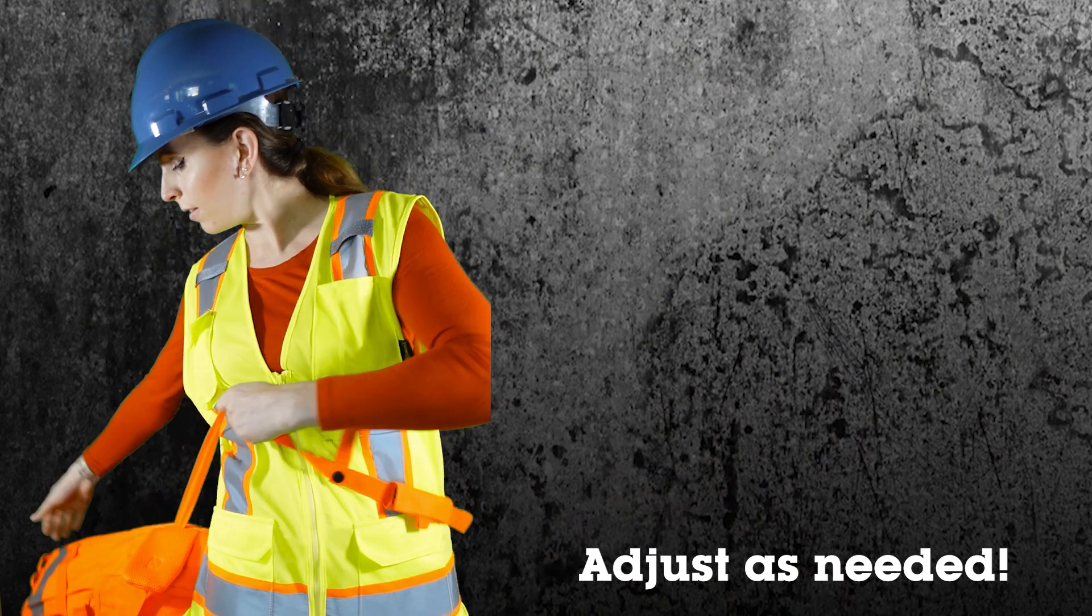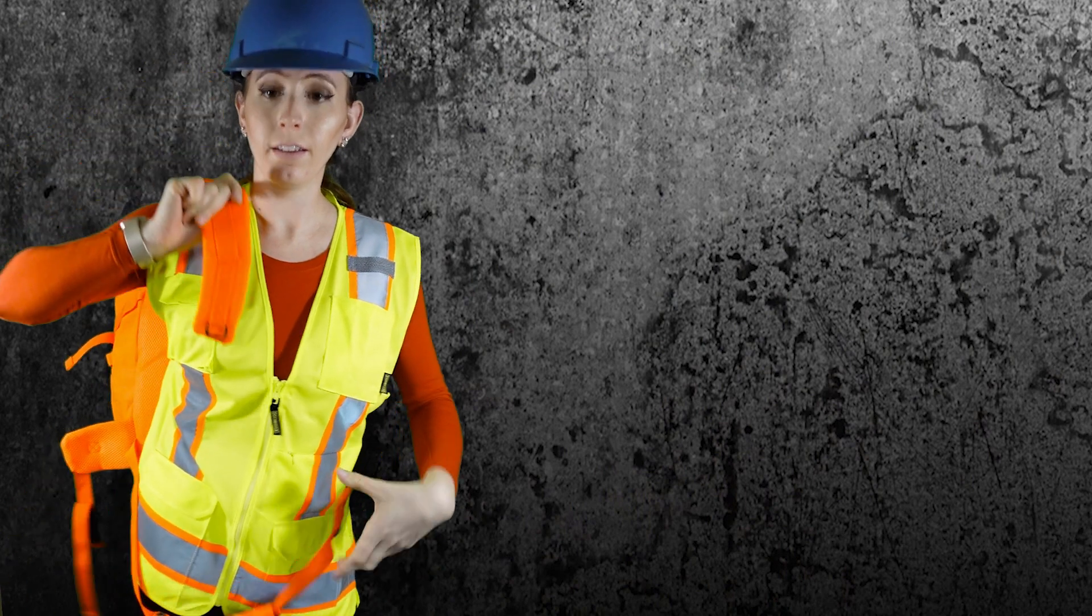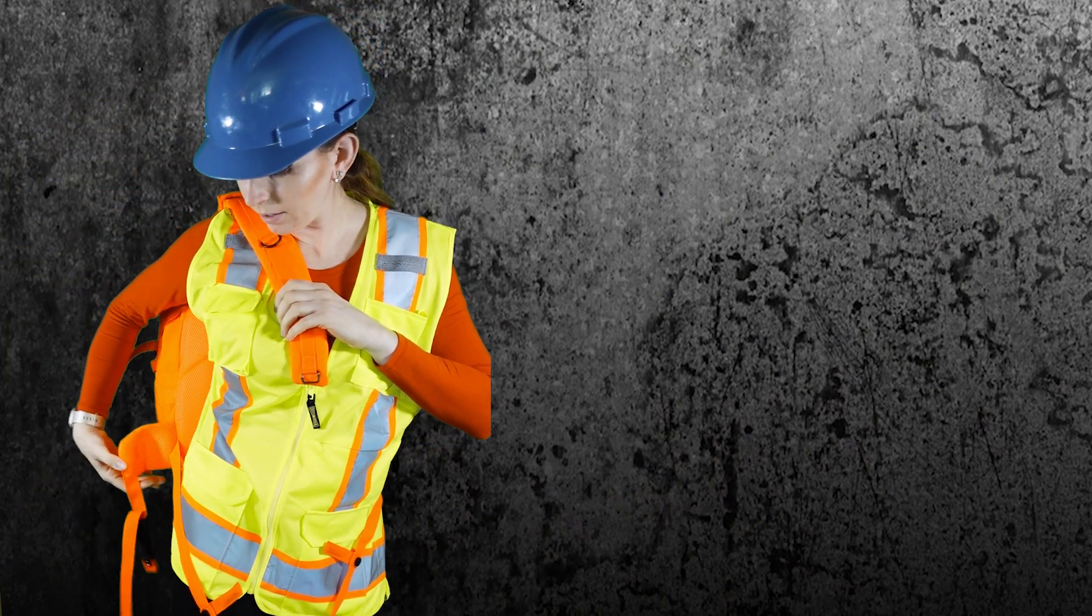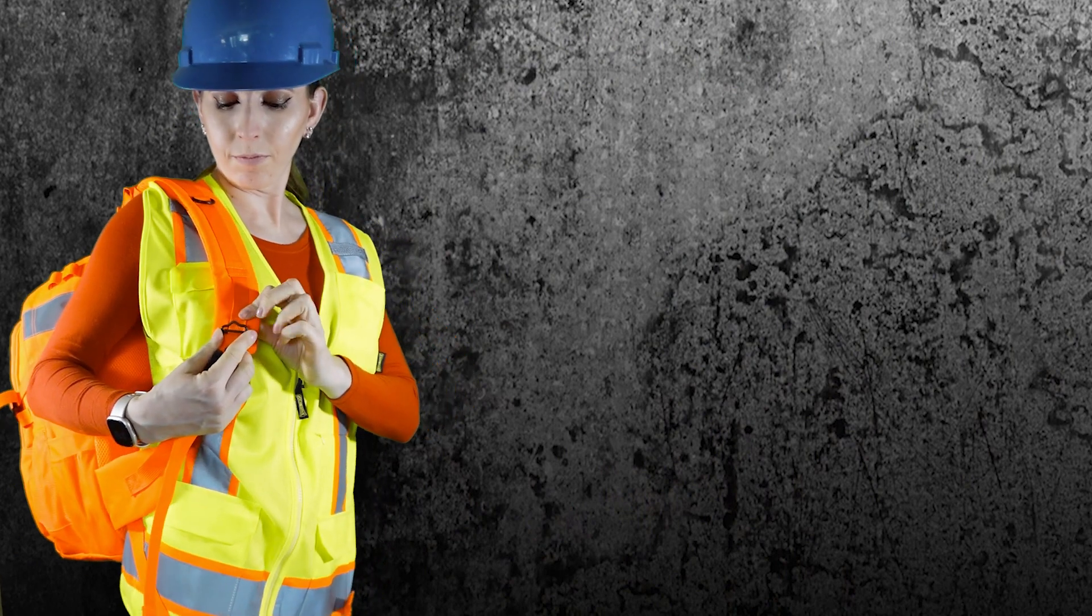Next, find one of your shoulder straps and pull it over your shoulder, and locate the pentagon D-ring on the under strap that is attached to the padded hip belt. Pull the strap under your arm towards the strap on your shoulder.